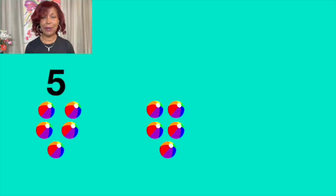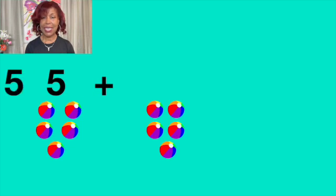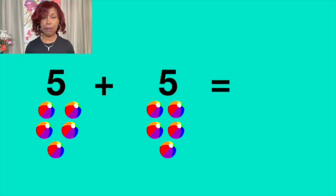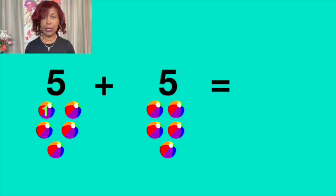Cinco más cinco igual a diez. Five plus five equals to ten. Vamos a contar. Let's count. Uno, one. Dos, two. Tres, three. Cuatro, four. Cinco, five.